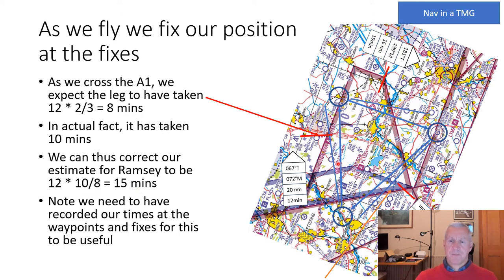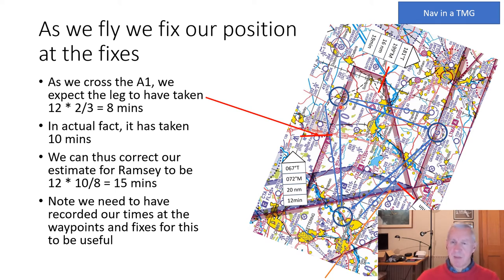That means when looking to identify the town ahead as Ramsey, if it appears at 15 minutes that's what we'd expect. If it appears at 12 minutes — 3 minutes early — we'd think it's probably not Ramsey. You need to have written down the previous times for this to work; you can't remember everything and you're going to be busy.